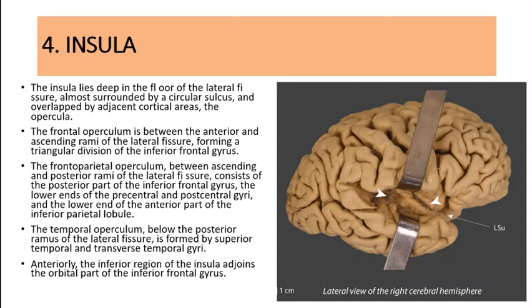This is where we last left our discussion. The insular lobe lies deep in the floor of the lateral fissure, almost surrounded by a circular sulcus and overlapped by adjacent cortical areas called opercula. The frontal operculum is between the anterior and ascending rami of the lateral fissure.